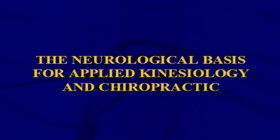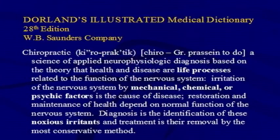The neurological basis for AK and the neurological basis for chiropractic are really interchangeable. By Dorland's Medical Dictionary 28th edition, chiropractic is 'a science of applied neurophysiologic diagnosis based on the theory that health and disease are life processes related to the function of the nervous system. Irritation of the nervous system by mechanical, chemical, or psychic factors is the cause of disease. Restoration and maintenance of health depend on normal function of the nervous system. Diagnosis is the identification of these noxious irritants, and treatment is their removal by the most conservative method.'